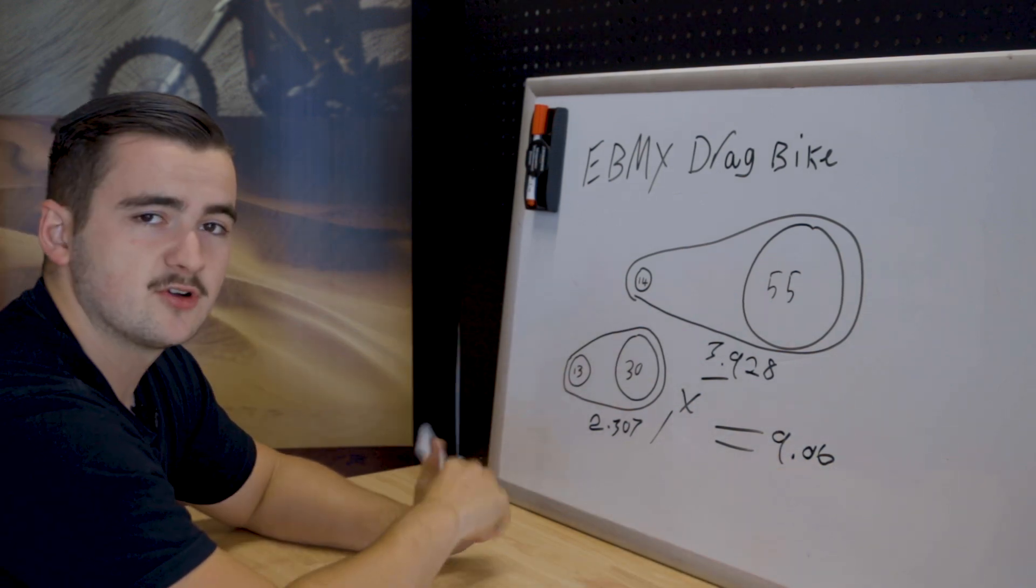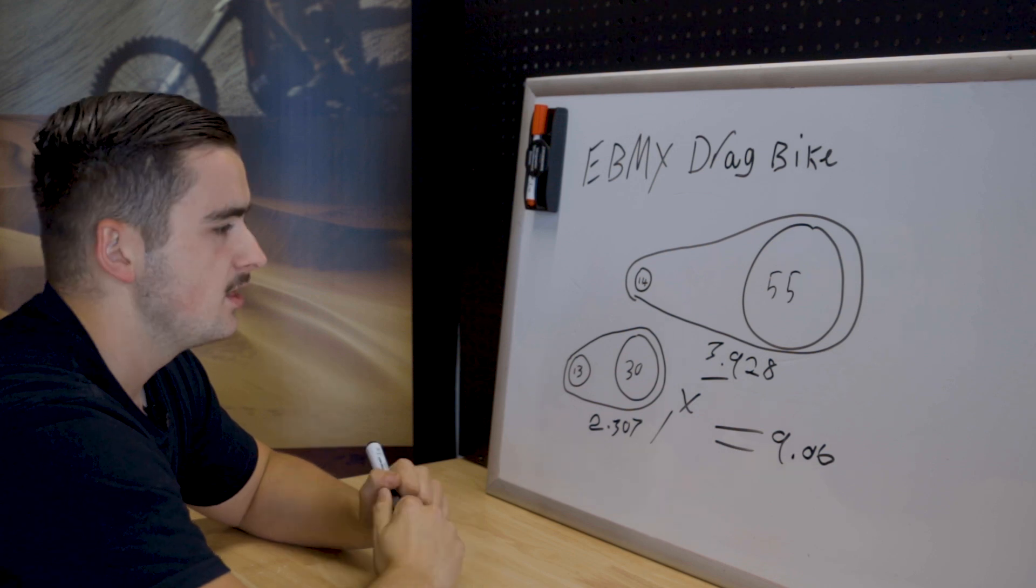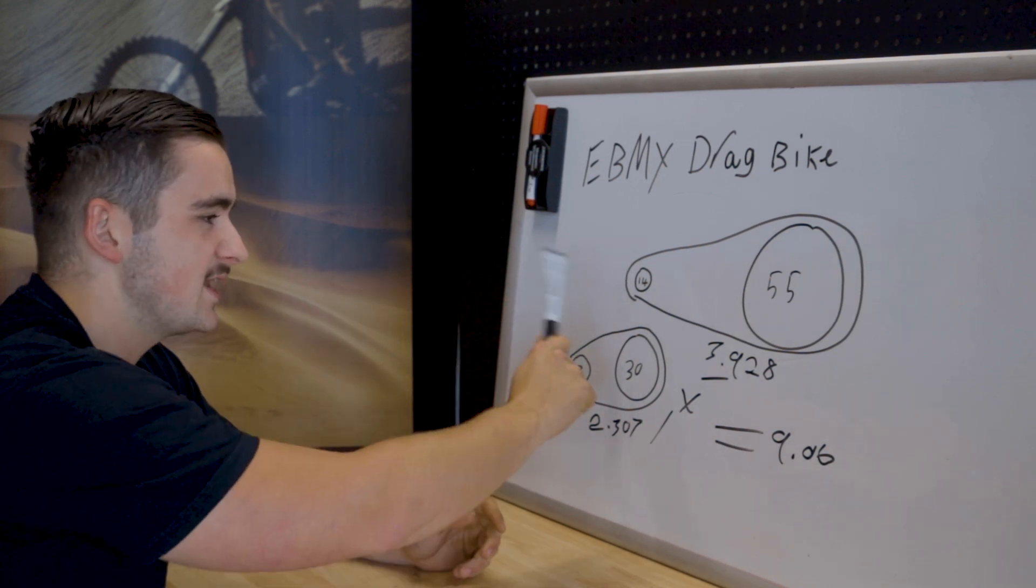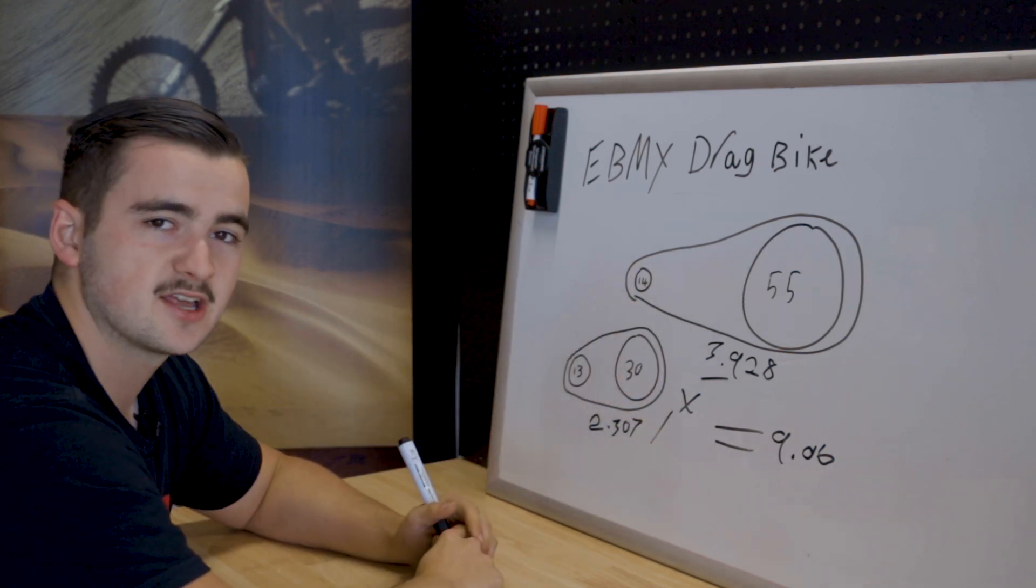Now what does this mean when you divide your big sprocket by your small sprocket? 3.928. That means that this sprocket here, your small sprocket, has to spin 3.9 times before your rear sprocket has done a full rotation.